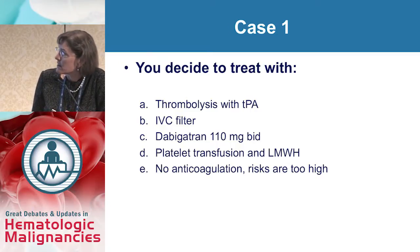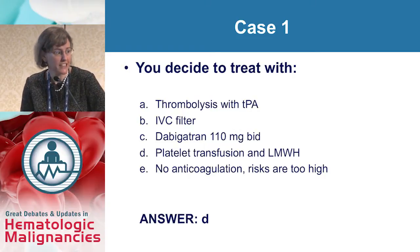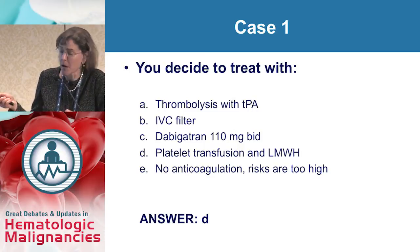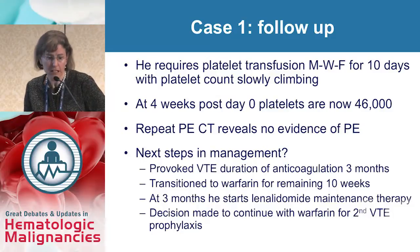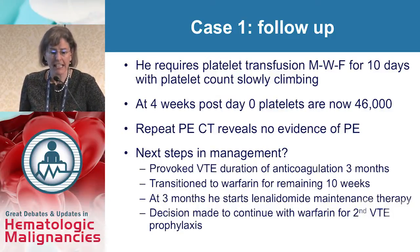The answer is D — platelet transfusion and low molecular weight heparin, with dose unspecified. Cancer patients with a platelet count of 11,000 almost never get thrombolysis, particularly with large tumor mass. An IVC filter is not indicated as he has no lower extremity DVT to embolize, and filter effectiveness in this setting has not been demonstrated. Dabigatran 110 mg BID is not even available in the United States, and we would not use oral anticoagulants here. This patient requires platelet transfusion Monday, Wednesday, Friday as an outpatient for 10 days, with his platelet count slowly climbing.